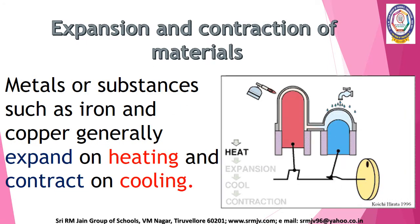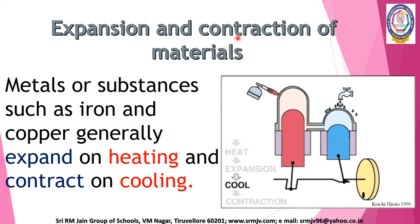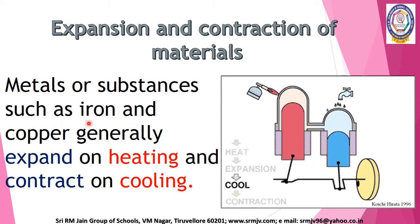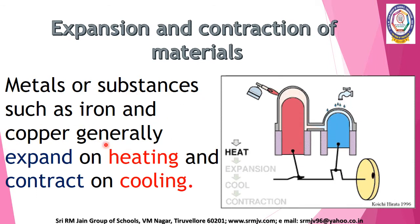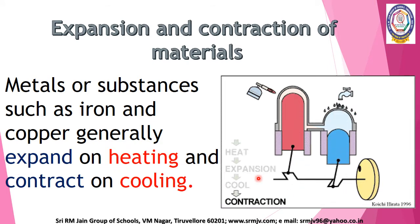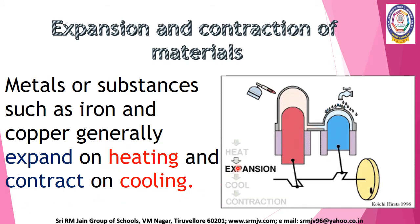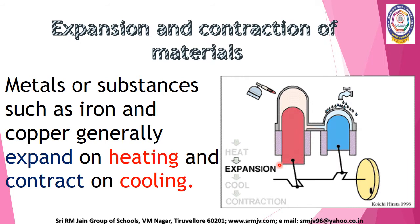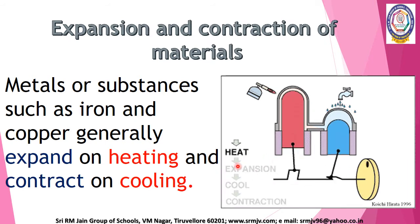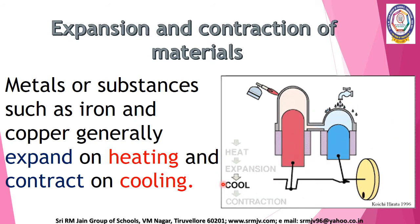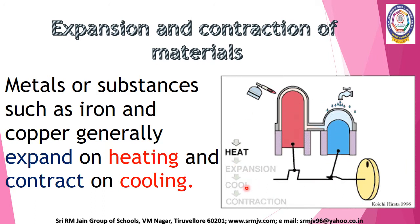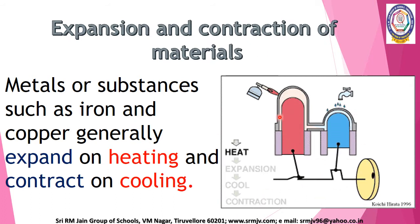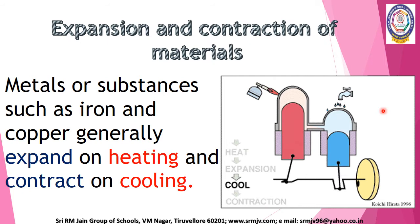Let us discuss about expansion and contraction of materials. Metals or substances such as iron and copper generally expand on heating and contract on cooling. When these substances are heated, their particles loosen up or spread out and therefore expand the substance. On cooling, the particles tighten or come closer and therefore the substances contract. Thus, it can be said that expansion and contraction is a reversible change.